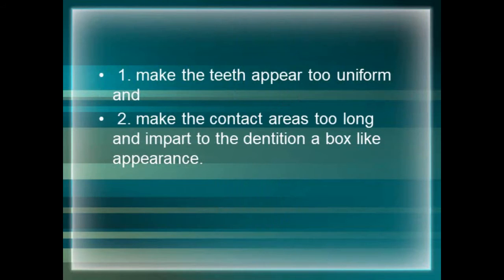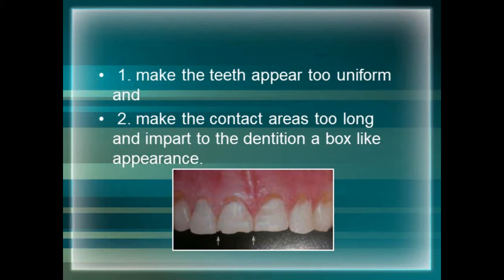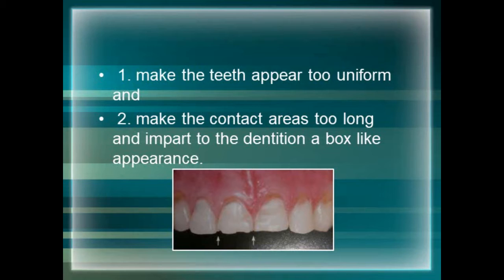If proper incisal embrasures are not provided, the teeth appear too uniform as in a worn-down dentition. The contact area becomes too long and imparts a box-like appearance. If the incisal embrasure is too deep, it makes the teeth look much more pointed. Therefore incisal embrasures should be given proper size and width.